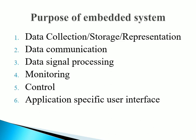Embedded systems with control functionality control variables according to changes in input variables. These systems have sensors and actuators. Sensors are connected to the input port to capture changes happening in the environment, while actuators are connected to the output port and respond according to changes in the input. The best example for this is an air conditioner.